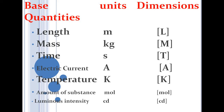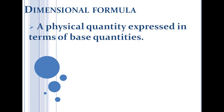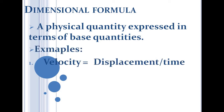Now let's discuss the dimensional formula. We have just discussed the base quantities and their dimensions. Any physical quantity expressed in terms of base quantities is called its dimensional formula. For example, to determine the dimensional formula of velocity, we need to know the formula or unit of the given physical quantity.